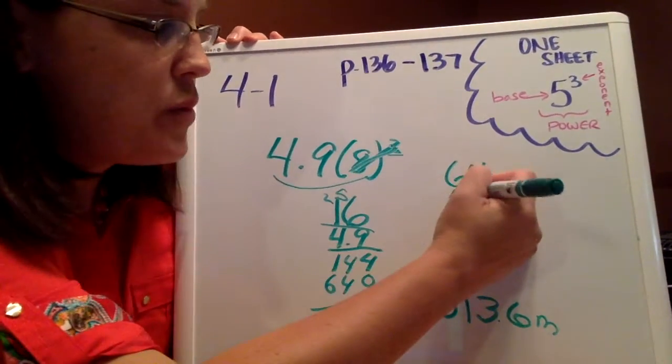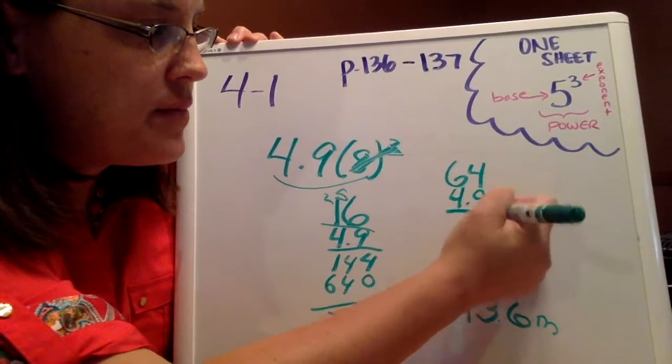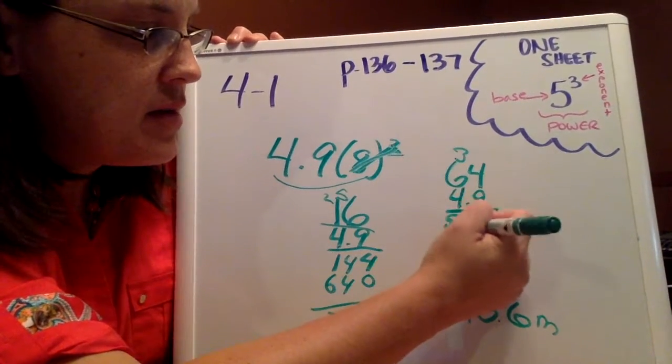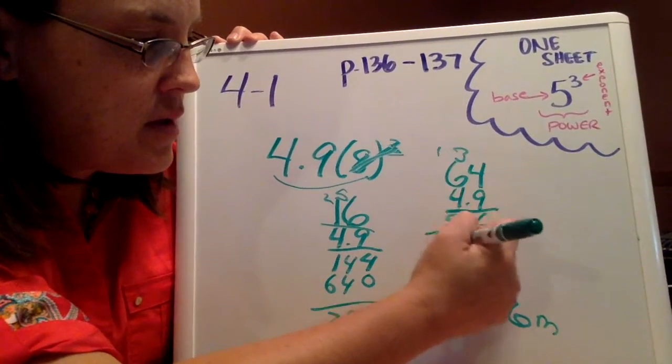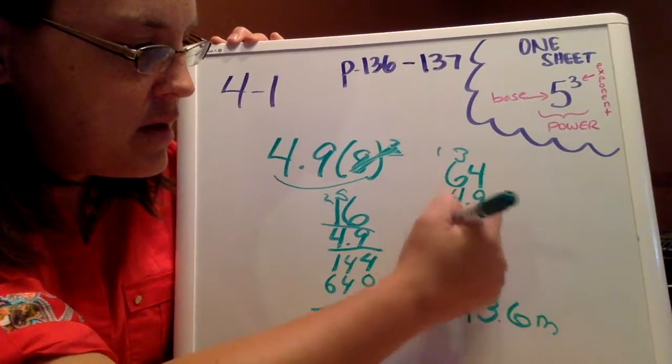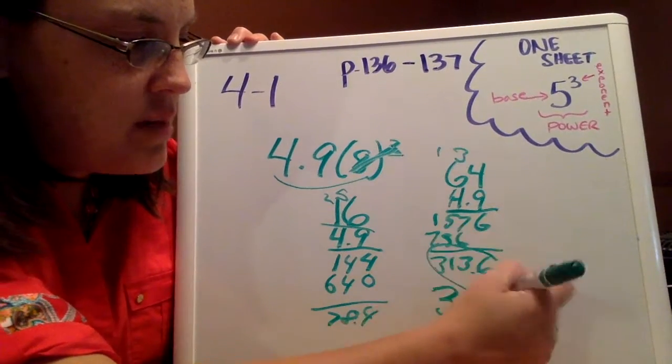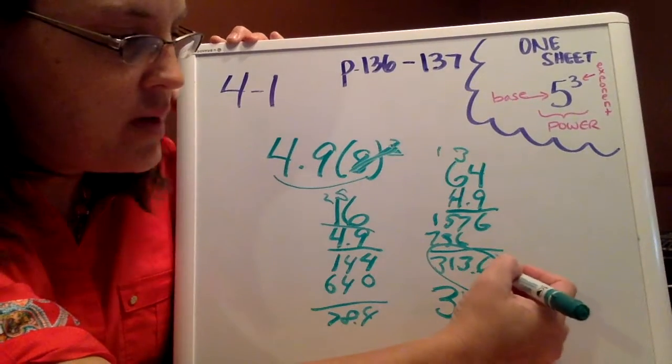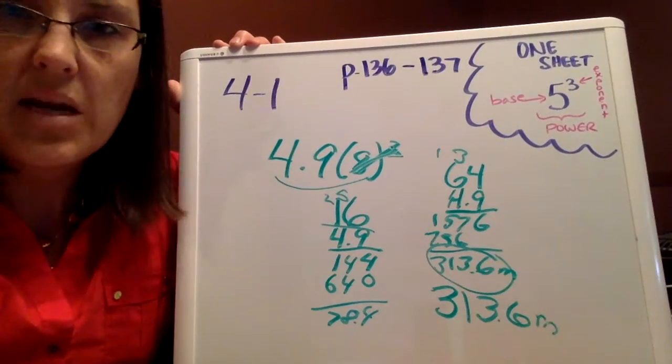So 64 times 4.9, let's rework that out. 313.6, and we're going to label that with meters.